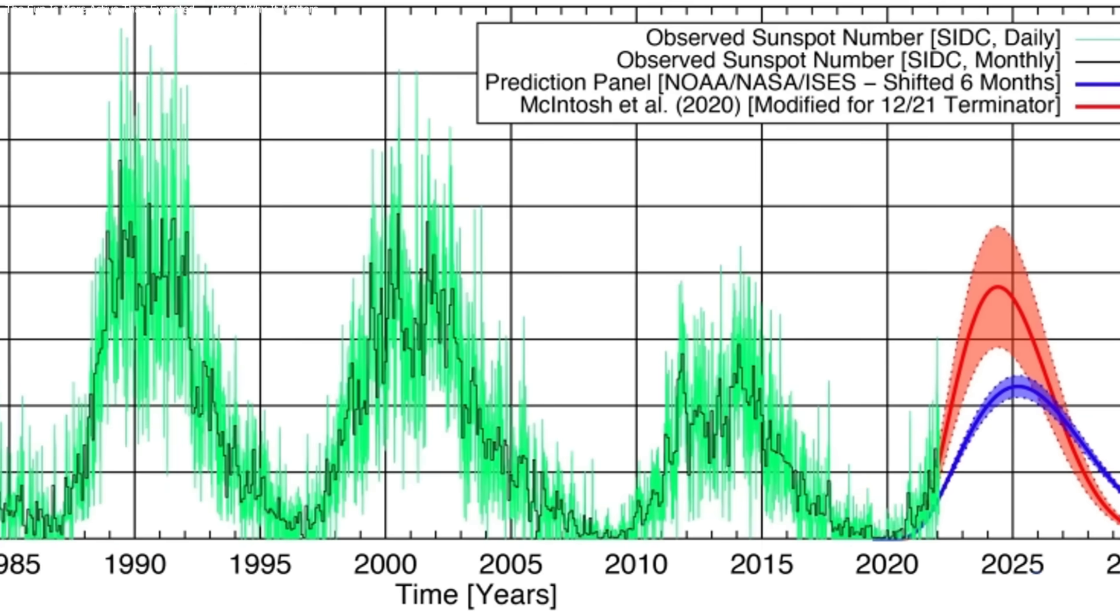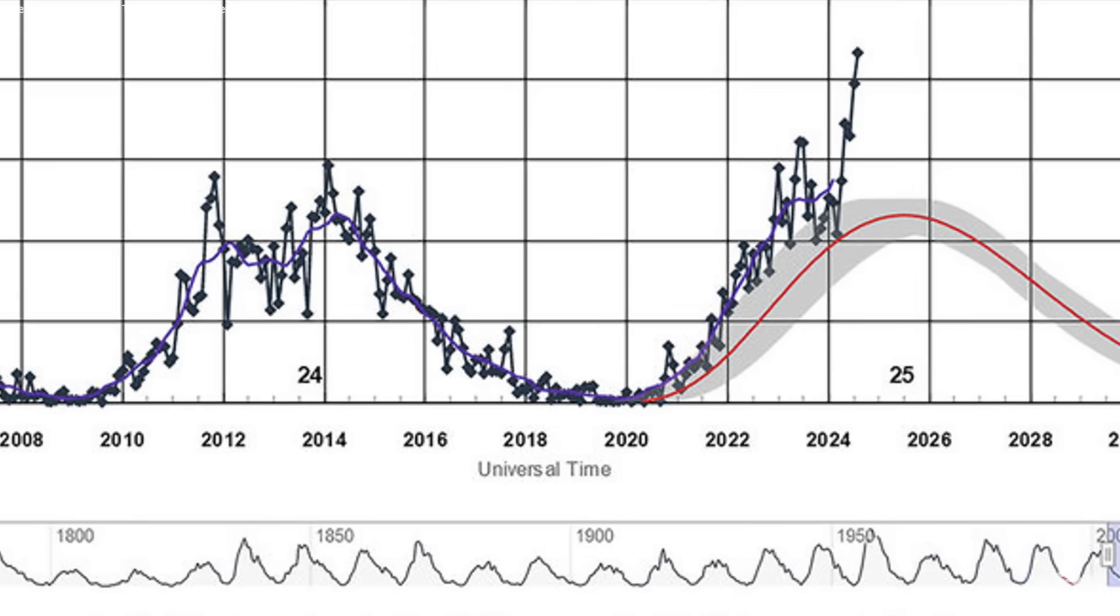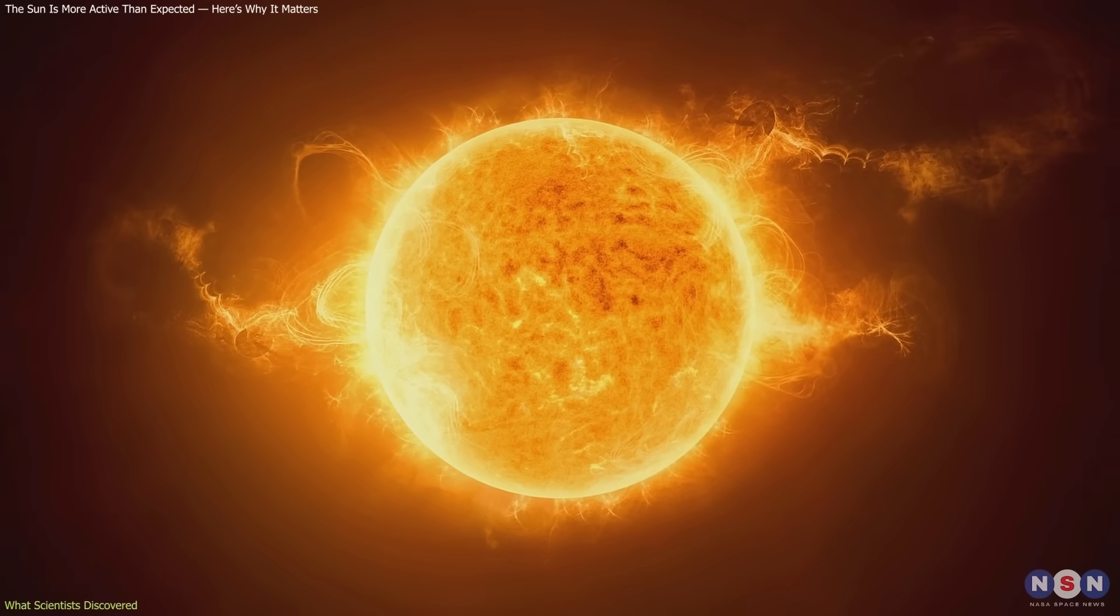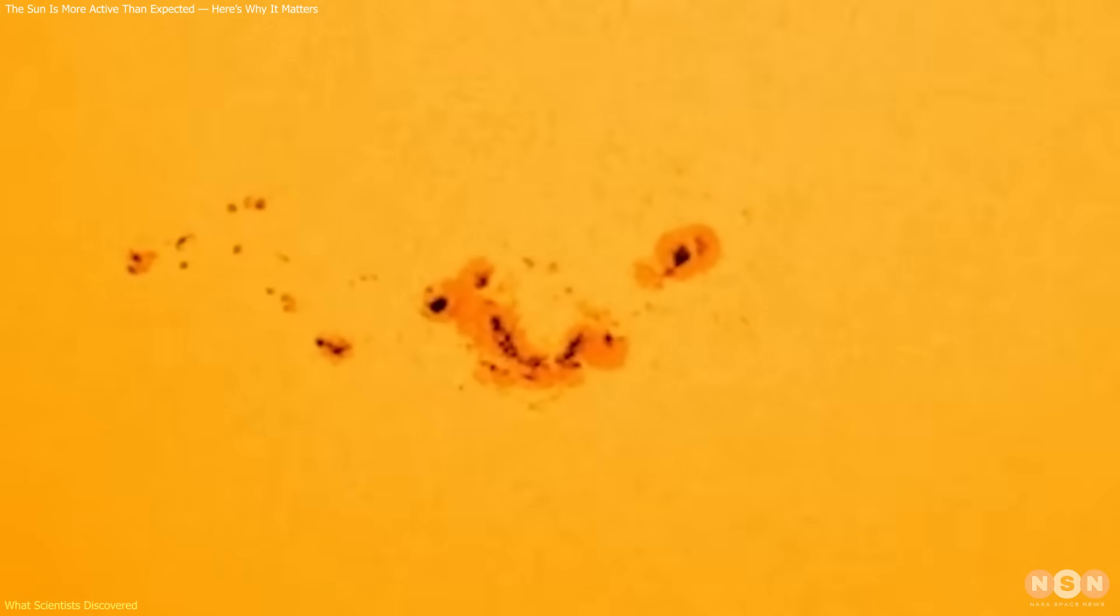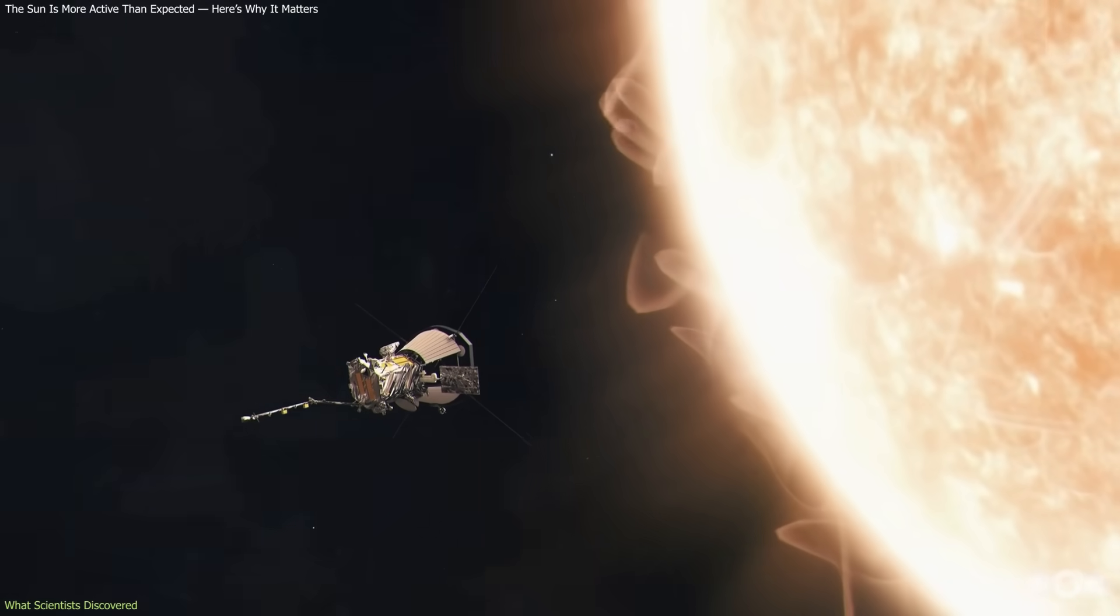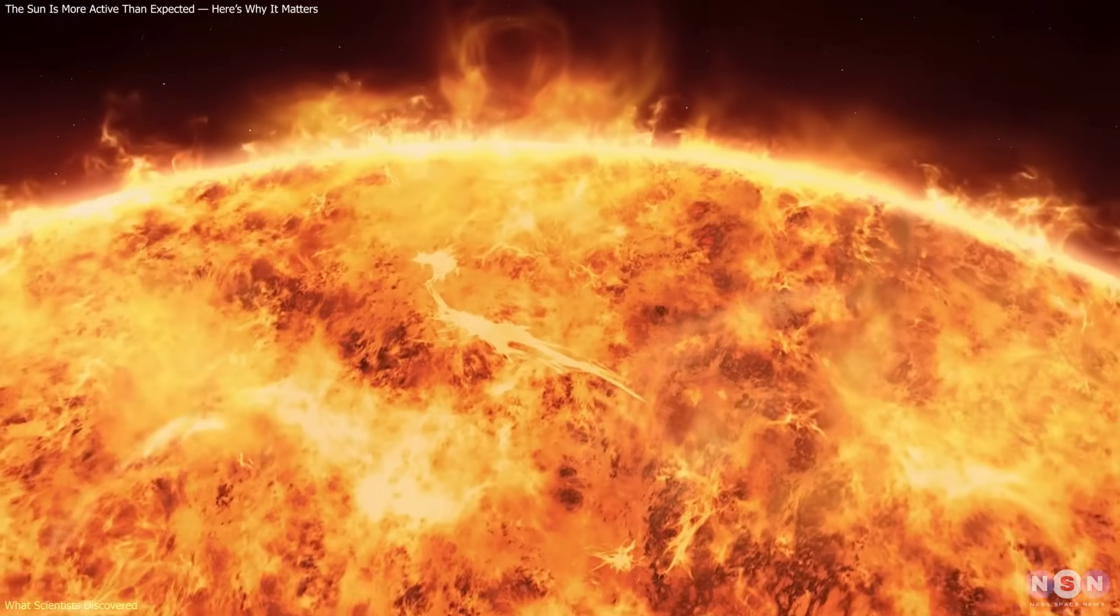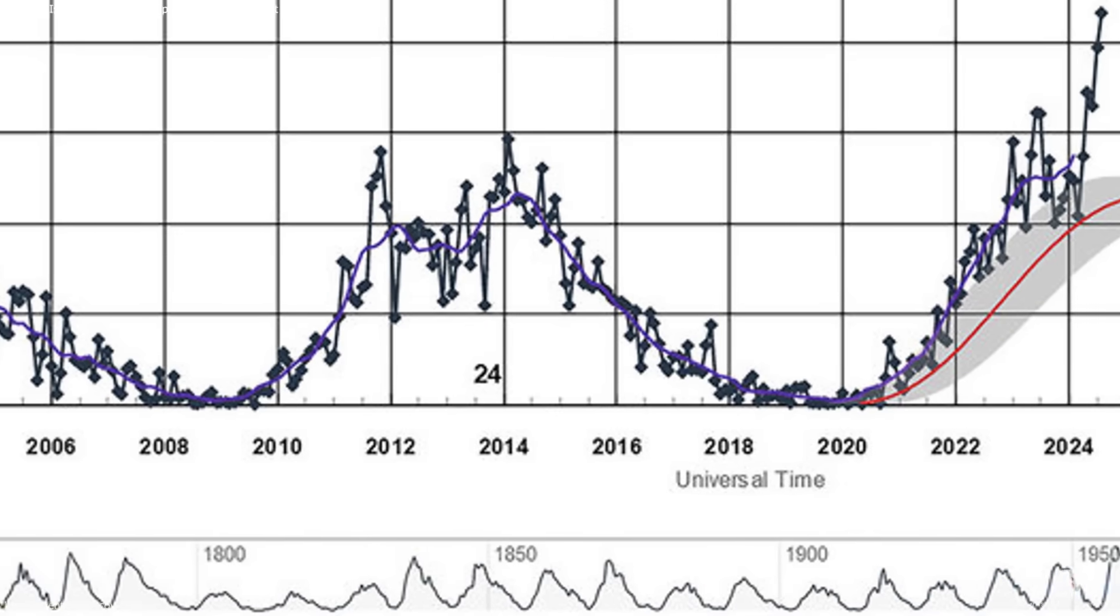The forecasts had missed it, not because of poor data, but because it had shifted in a way models didn't anticipate. This matters because solar forecasting is notoriously difficult. Even with centuries of sunspot records and decades of satellite monitoring, it often surprises us. Its magnetic processes are complex, and the links between surface activity, internal flows, and longer-term cycles remain only partly understood.